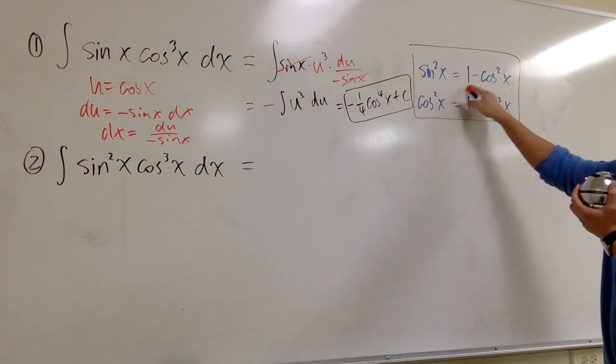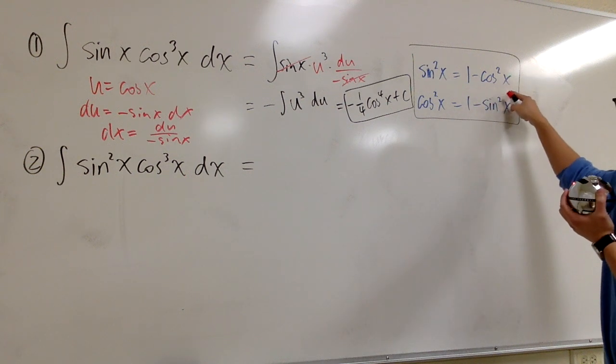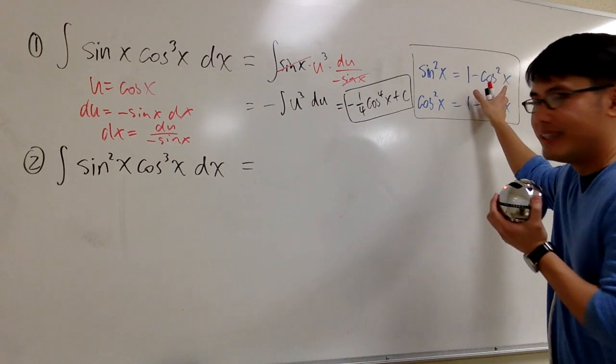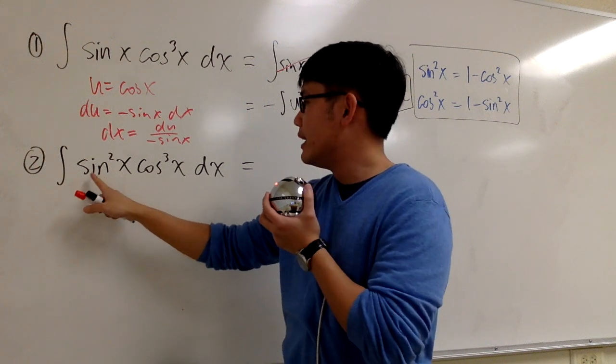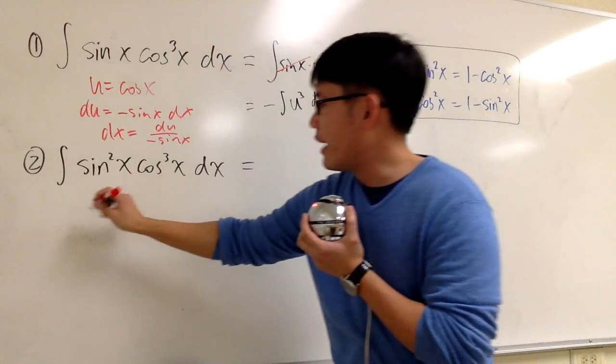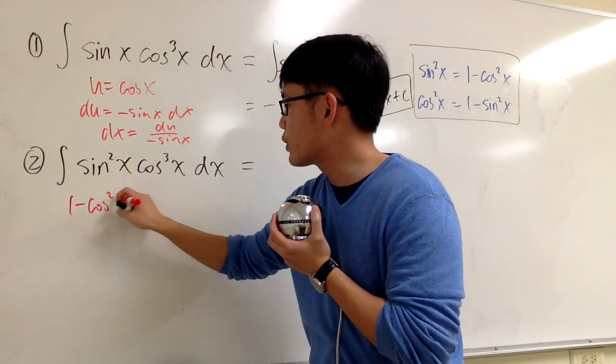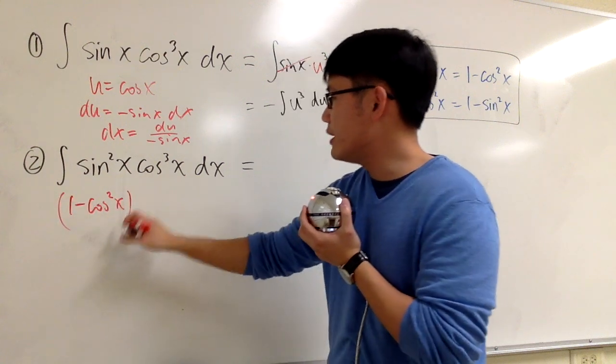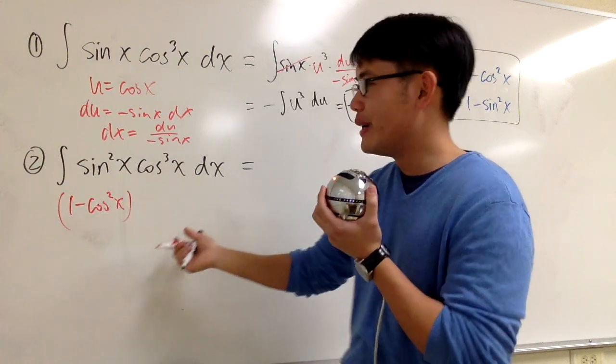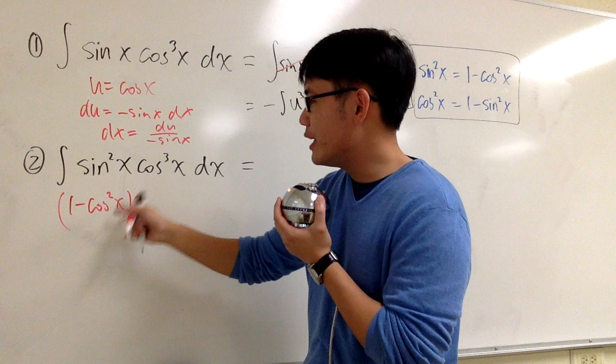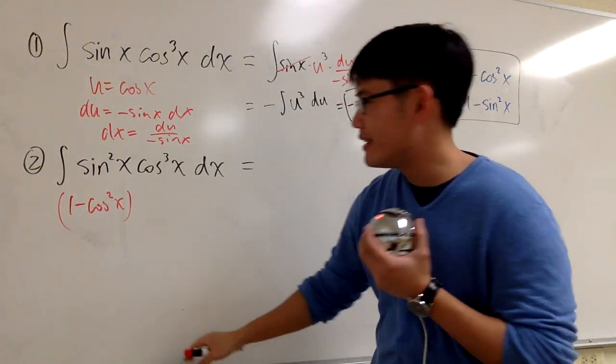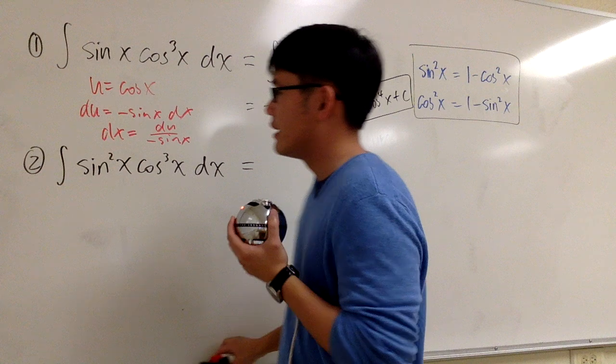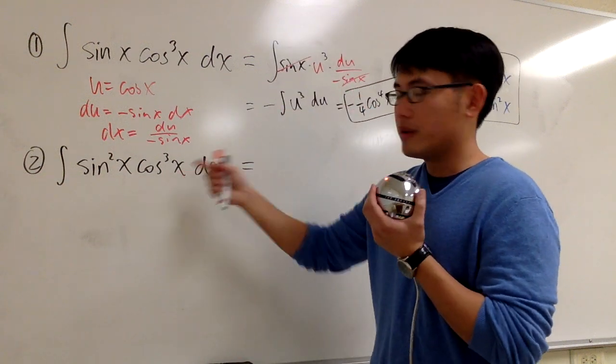We know that sine squared x is equal to 1 minus cosine squared x. But then, if you get excited and just plug this into that, if you say sine squared x is 1 minus cosine squared x, and then you do this times that, guess what? You have to end up with integrating cosine to the fifth power, and that's so much harder. We don't want that. So what should we do? This is how.